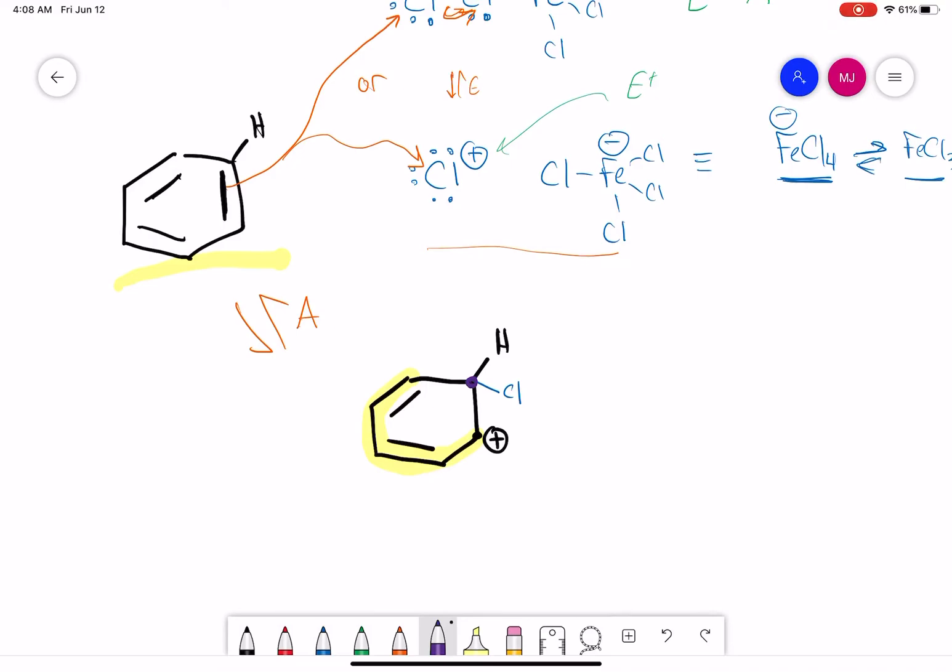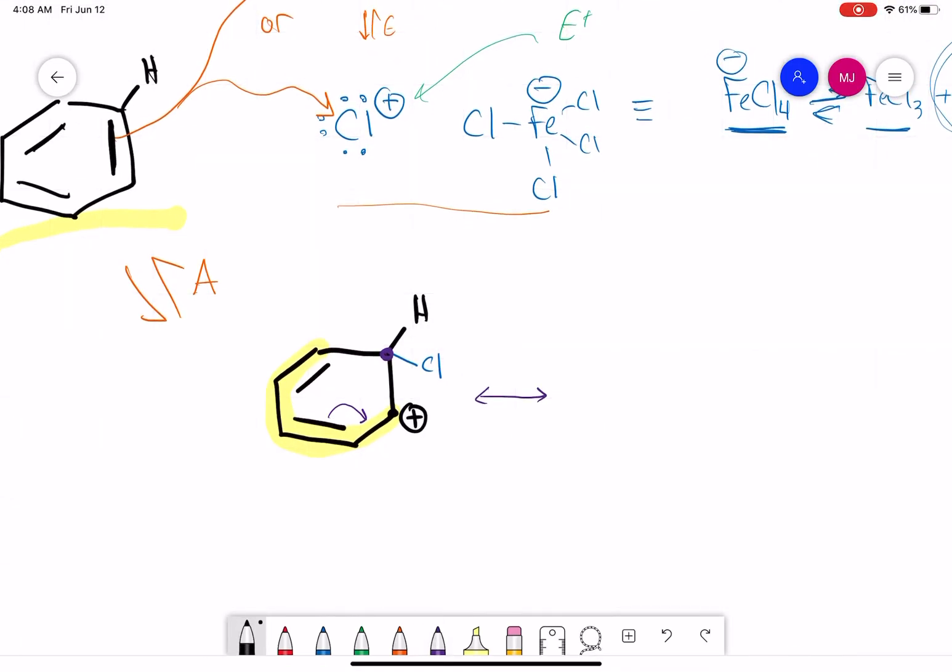This carbocation intermediate is high in energy, but it's stabilized by resonance. So I can draw resonance structures associated with this, which is why the reaction can work.